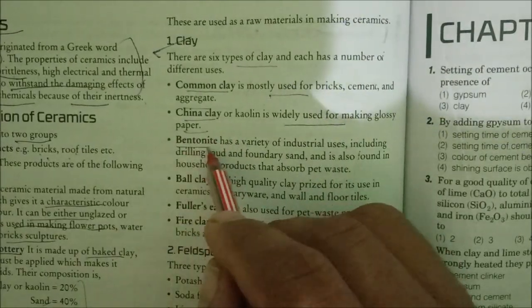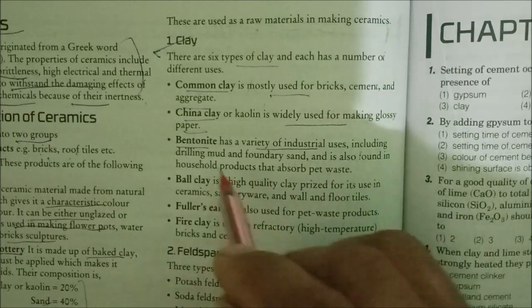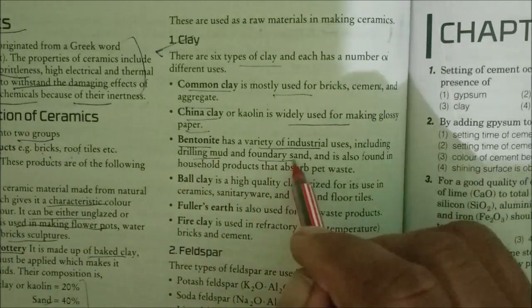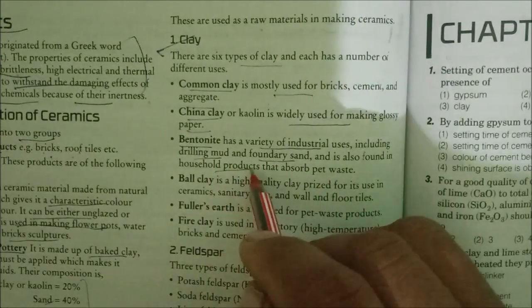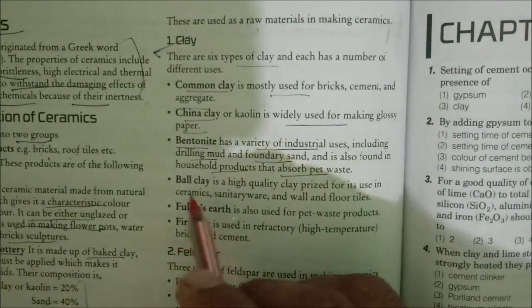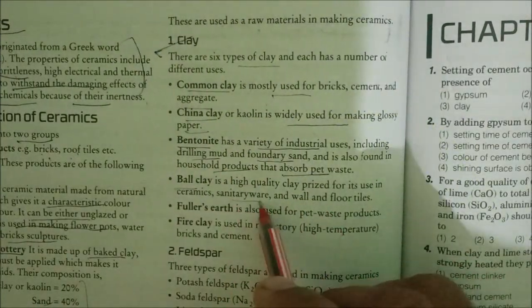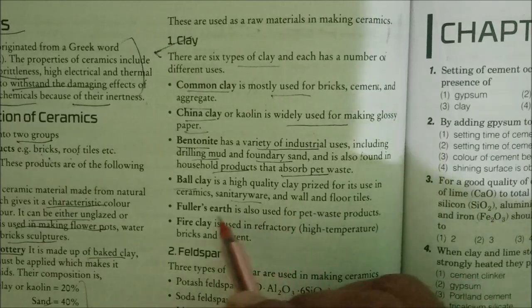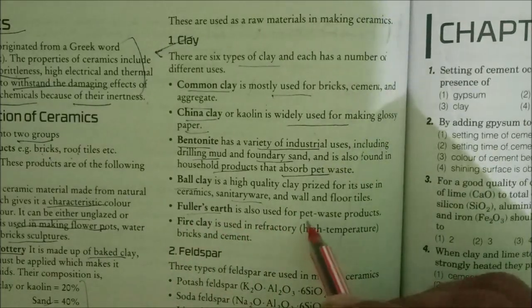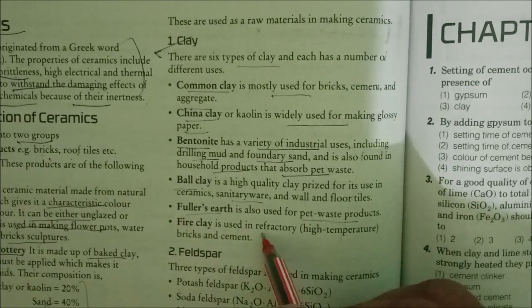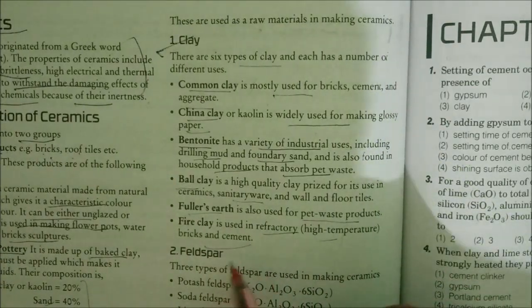Bentonite has a variety of industrial uses including drilling mud, foundry sand, and is also found in household products that absorb pet waste. Ball clay is high-quality clay prized for its use in ceramics, sanitary wares, and wall and floor tiles. Fuller's earth is used for pet waste products. Fire clay is used in refractory high-temperature bricks and cement.